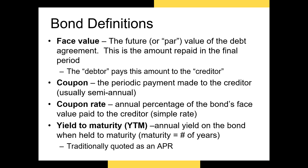Next we have the yield to maturity. The yield to maturity is what most people think of when they think of an interest rate on a bond. It represents the annualized return on the bond if that bond were going to be held to maturity. We'll calculate the yield to maturity in a later video. For now, you should know that the APR quoted by lenders is generally our yield to maturity.